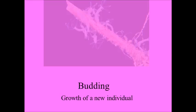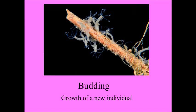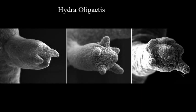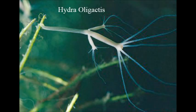Budding is an unusual form of reproduction. It involves the growth of a new individual as an extension of its parent. The parent plant of the Hydra oligactis reproduces by growing bud-like substances on its body that eventually separate from the parent plant and grow as a new individual.